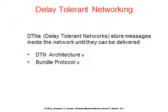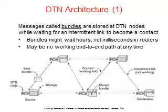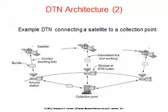Delay Tolerant Networks (DTN) store messages inside the network until they can be delivered — similar to a store-and-forward cache. The architecture uses messages called bundles, stored at DTN nodes while waiting for an intermediate link to become available. Bundles may wait hours rather than milliseconds in routers. There may be no working end-to-end path at any time. The advantage over traditional wireless networks is handling situations like a satellite with no current contact with a ground station — satellite software can still send images and store them even if the network cannot forward them immediately. Storing bundles at ground stations also decouples the satellite link from the ground backlog.